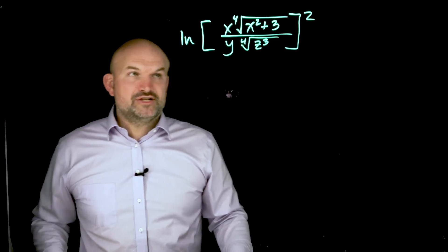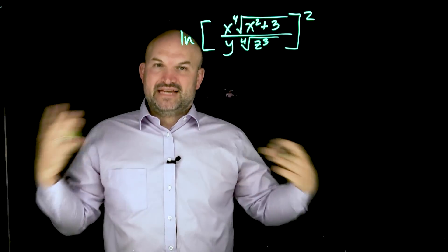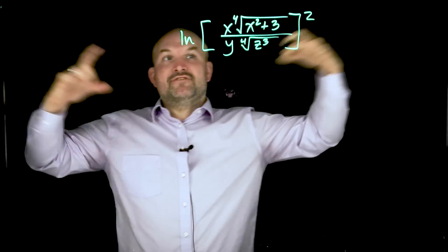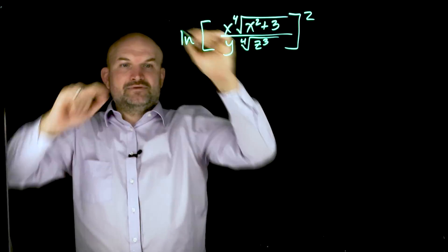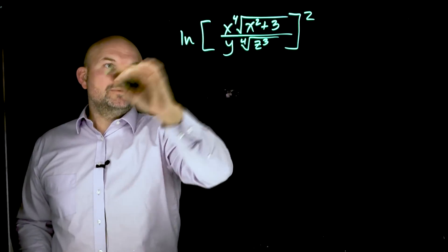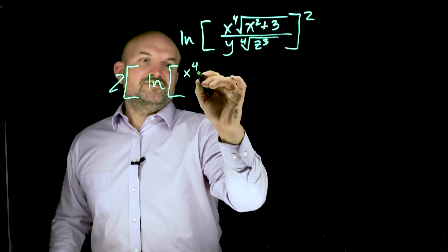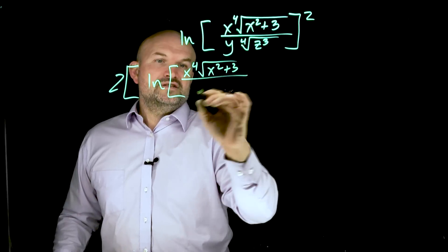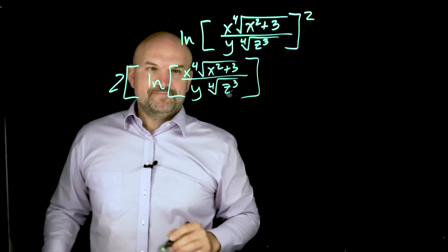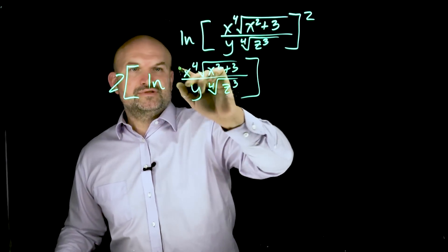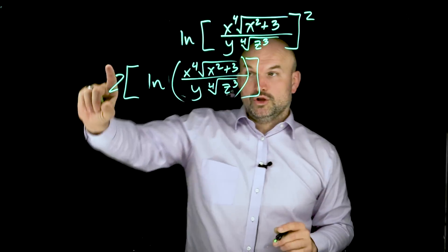So what I mean by the reverse order of operations is I basically want to kind of work from the outside in. So you notice that on the farthest outside here, I have my power 2. So I want to rewrite that. I want to take that down to the front. So I'll have this written as a 2. And again, I'm going to insert here my parentheses, ln of x to the fourth square root of x squared plus three divided by y to the fourth root of z cubed. This has a lot. I don't know why I'm using brackets twice. We'll use parentheses for that argument from on there. So 2 is going to be multiplied by this whole expression here.